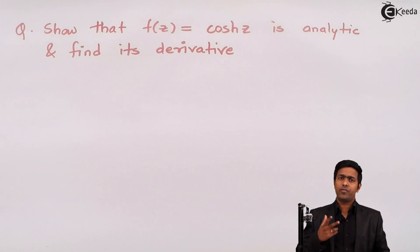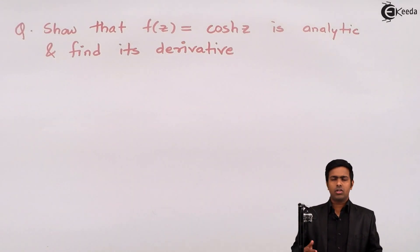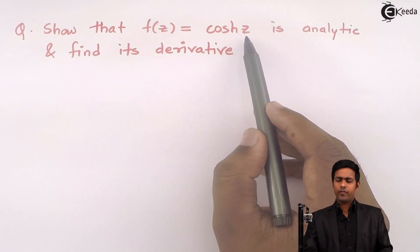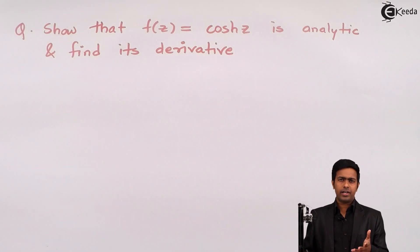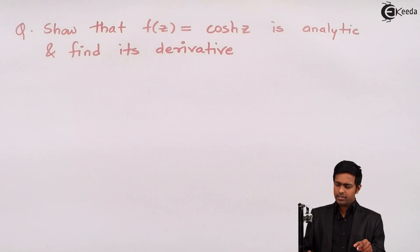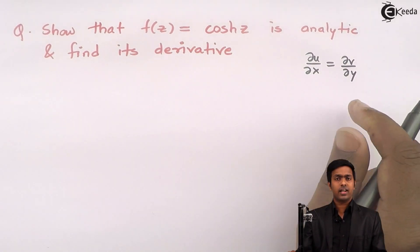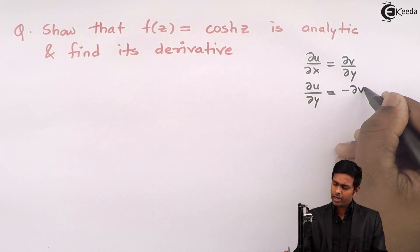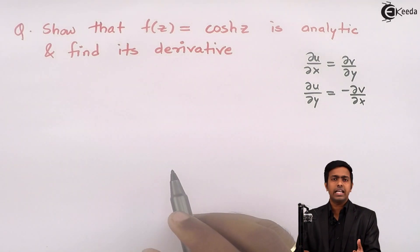To prove the Cauchy-Riemann equations we have two options: using polar coordinates or using Cartesian coordinates. Since we have f(z) = cosh(z) and z is a complex number, I can represent z as x + iy. So I will convert it into Cartesian coordinates. The Cauchy-Riemann equation in Cartesian coordinates is ∂u/∂x = ∂v/∂y, and we will also prove that ∂u/∂y = −∂v/∂x. By proving these two conditions, we can prove that the given function is analytic.